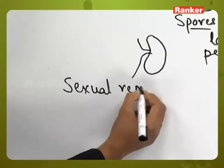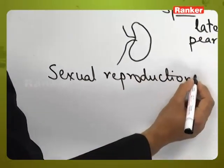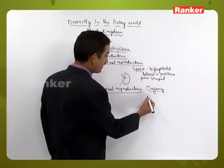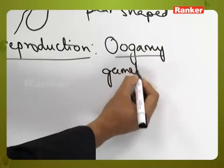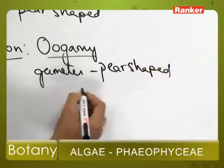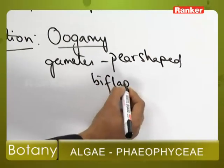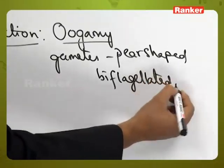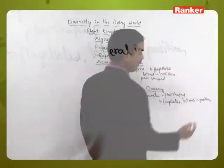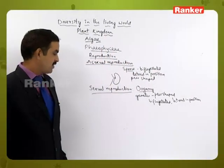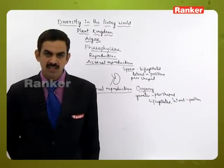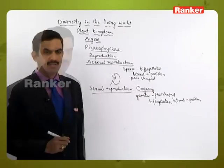Sexual reproduction occurs by the oogamy process, where the gametes are also pear-shaped and biflagellated, similar to the spores, and the flagella are lateral in position. Through oogamy, a zygote is formed, and the zygote will perpetuate in the daughter generation.